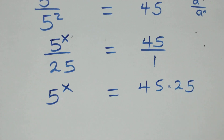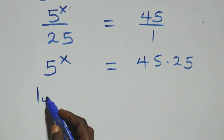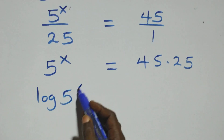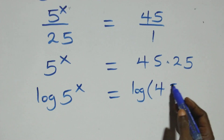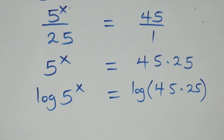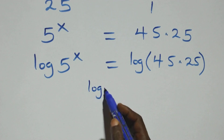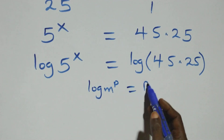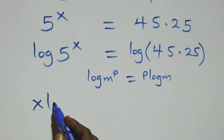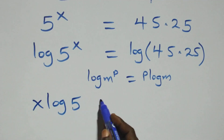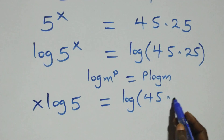Next step: we take the log on both sides. We have log 5 raised to power x equals to log 45 times 25. Then from here we apply the power rule of logarithms — when we have log m raised to power p, this is the same thing as p log m. So this becomes x log 5 equals to log of 45 times 25.